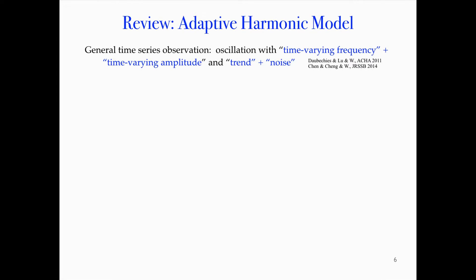The first model is called the adaptive harmonic model. There are some common ingredients in the signals we saw. First, the frequency is not constant — it changes from time to time. Second, the amplitude changes. Third, there may be some kind of trend — a slowly varying, local thing. Fourth, there is inevitable noise. How can we quantify these things to model the signal?